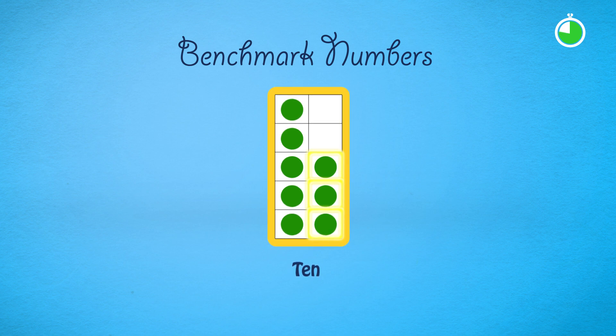5 and 10 frames give you more information than regular dot patterns. They show you the relative position of one number to a familiar benchmark number.